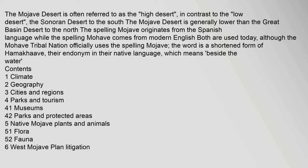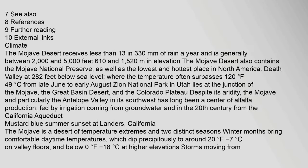The video covers the following topics: climate, geography, cities and regions, parks and tourism, museums, parks and protected areas, native Mojave plants and animals including flora and fauna, West Mojave plan litigation, and further references. The Mojave Desert receives less than 13 inches of rain annually.